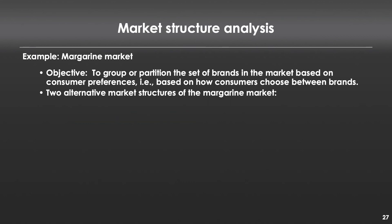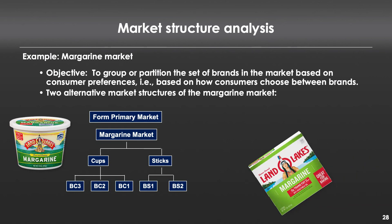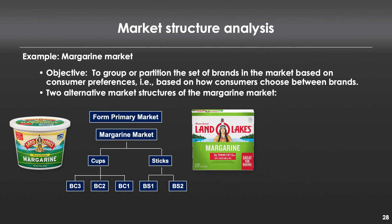Let's imagine we're in the world of margarine sales and we want to understand how consumers approach this purchase decision. We can imagine two approaches. The first is a form primary market — consumers first decide the form factor, whether it's cups or sticks of margarine, and then choose which brand to buy. If they chose cups, they could choose from brand cups one, two, or three; if sticks, brand one or two.